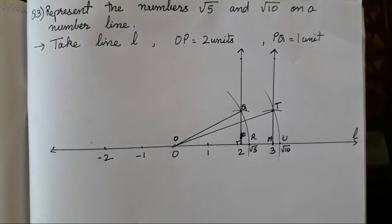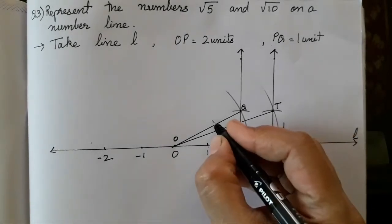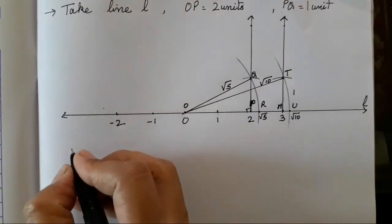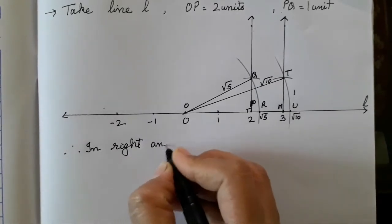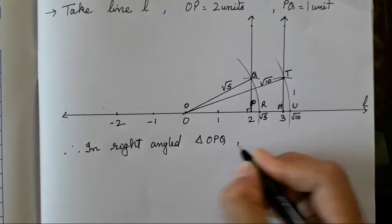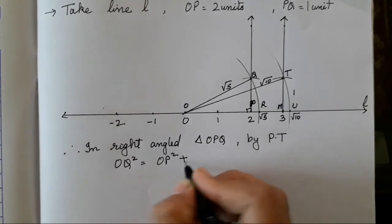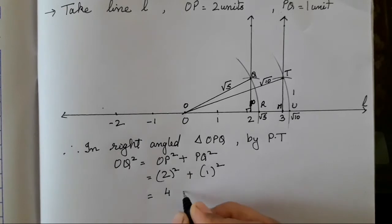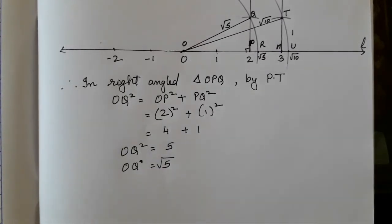In this way you all have to mark everything — this line is 1 unit, this line is 1 unit, this is 2 units. So this is root 5 and this is root 10. Now by Pythagoras theorem, you have to show this in written form. In right-angled triangle OPQ, by Pythagoras theorem: OQ² = OP² + PQ² = 2² + 1² = 4 + 1 = 5. Therefore OQ = √5.